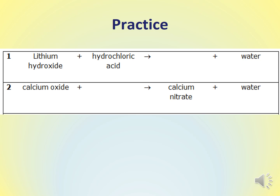Let's have a go at some practice questions. The names are in a different order so don't get muddled. We've got lithium hydroxide — recognise that a hydroxide is an alkali — and hydrochloric acid. We need to figure out the name of the salt; water has already been done for us. The first part of the salt name comes from the metal: lithium, from lithium hydroxide. The second part comes from the acid — hydrochloric acid always makes salts with chloride in the name. So the salt is lithium chloride.